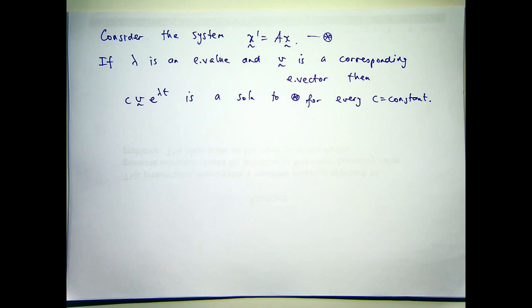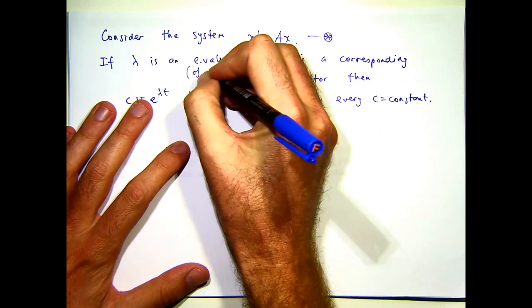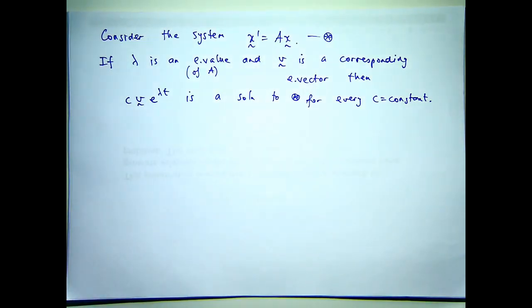Now it's claimed that if λ is an eigenvalue of A, and V is a corresponding eigenvector, then for any constant C, C times the eigenvector V times e to the λt is a solution to the system star.